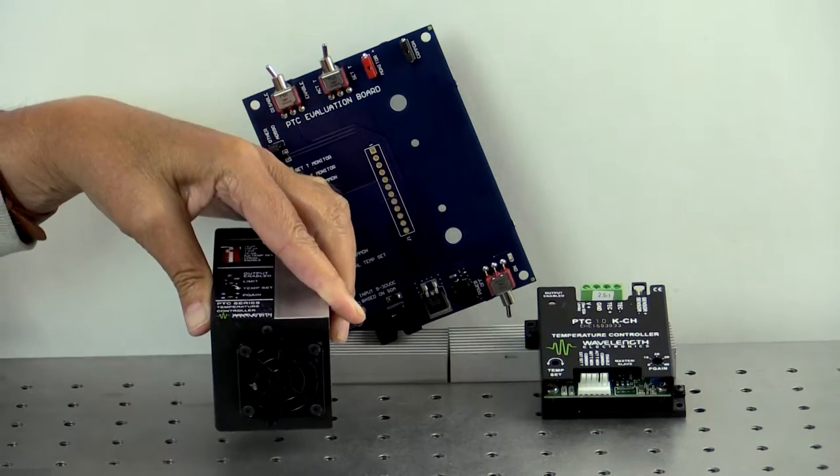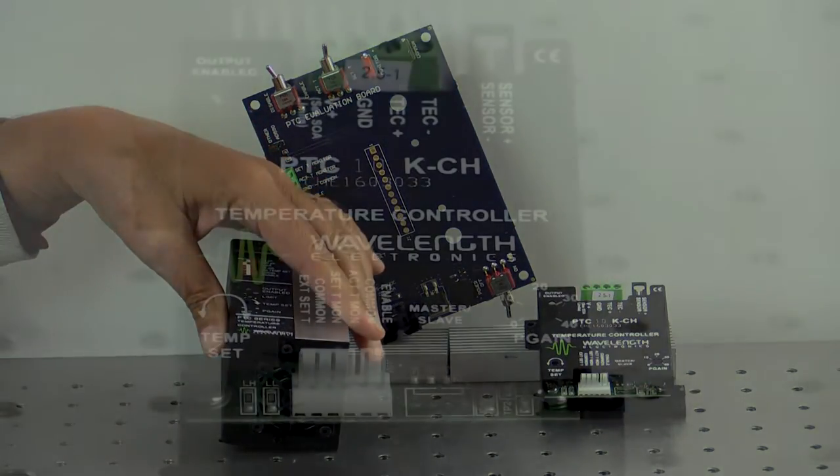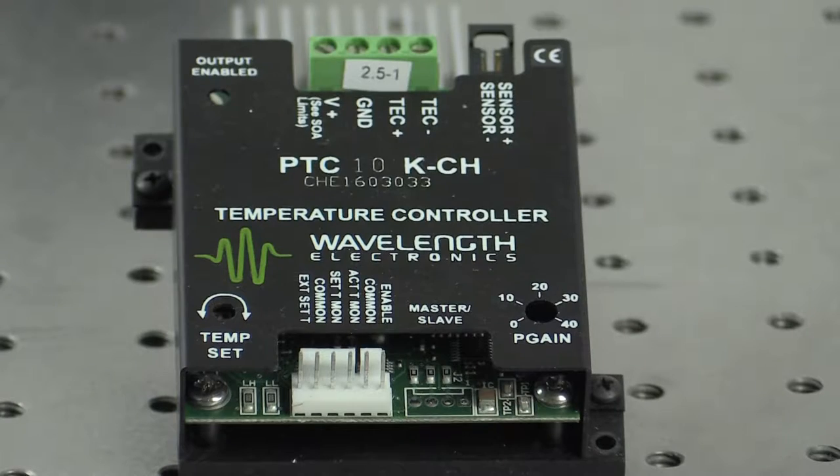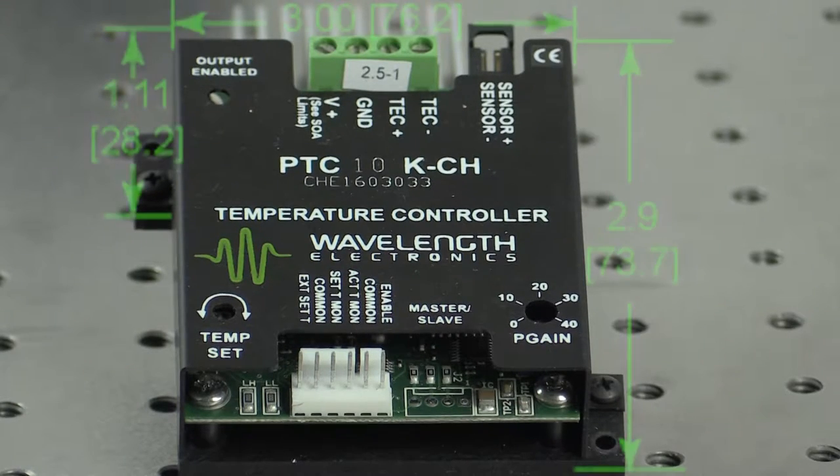An evaluation board is available to simplify testing and chassis mount which allows you to deliver the heat sink and airflow solutions ideal for your application. It is the most compact package and connects via cables.